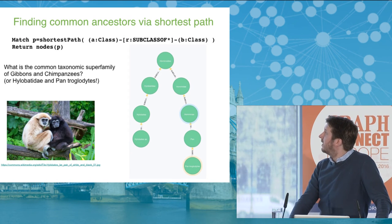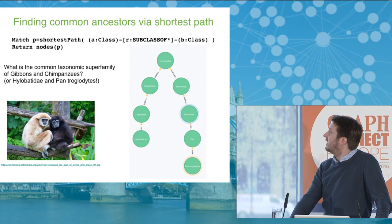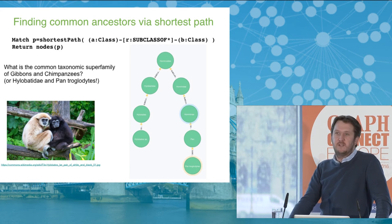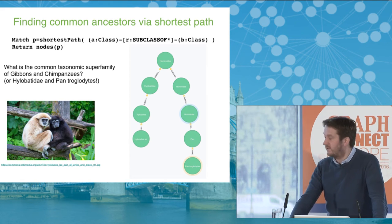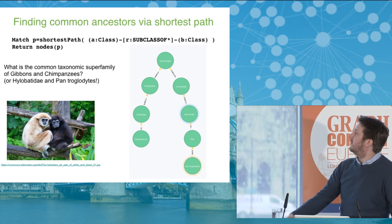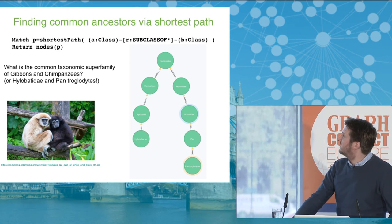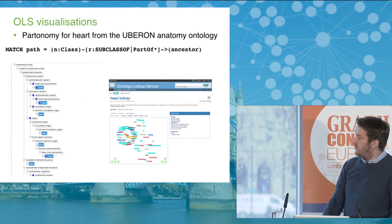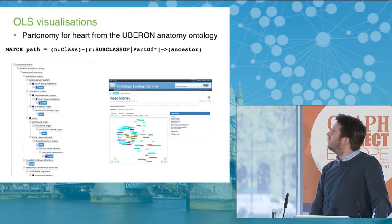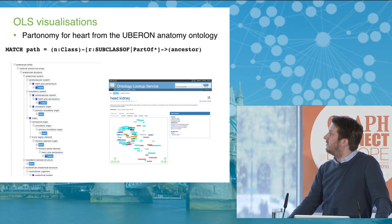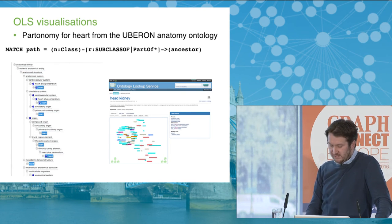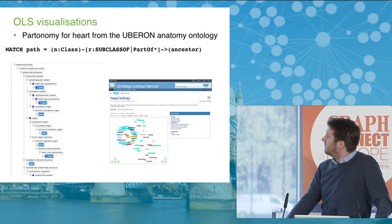Another useful capability - we're often interested in common ancestors and shortest path type queries. This is something that's nicely supported in Neo4j, which we didn't get out of the box with some of the RDF databases we were initially looking at. We can look for things like common taxonomic superfamilies with a very simple Cypher query. What we're really using Cypher for is to generate visualizations in OLS. If you go to the OLS site and search for terms, we can pull out partonomy very quickly - for example, the partonomy for heart - and generate a nice visualization. We've also developed a graph-based visualization where you can click and explore around these ontology terms.